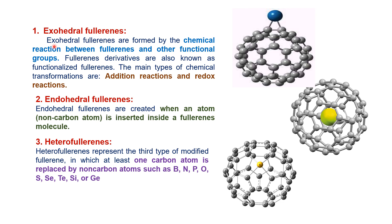Exohedral philorenes are formed by the chemical reaction between a philorene and another functional group. When the philorene molecule and the functional group chemically react with each other, a new bond is formed between the carbon atom of the philorene and the functional group. This is also known as functionalized philorene. The two main types of reactions taking place are the addition reaction, because there is a double bond, and the redox reaction.